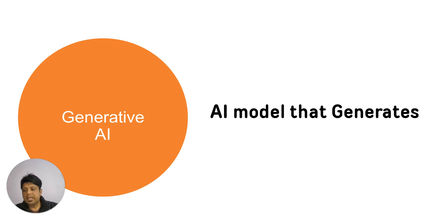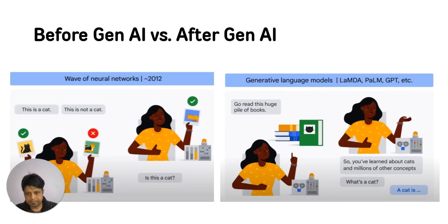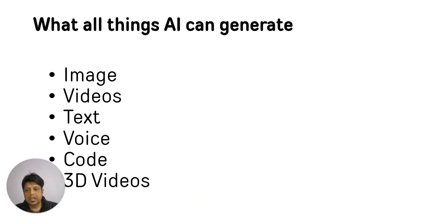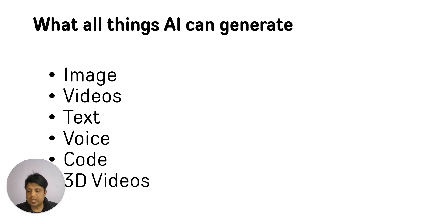What all things can AI models generate? It's not that AI models can generate anything. Currently, AI models can generate images, they can generate videos, they can generate text. ChatGPT generates text. AI models can also generate voice and synthesize voice. AI models can generate code and 3D videos.